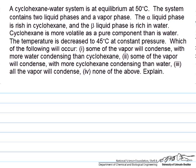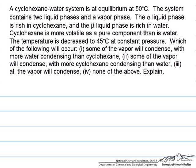At constant pressure we are going to decrease the temperature to 45 degrees C, and basically the question is what happens to the different phases in this system.